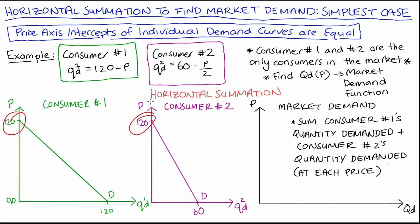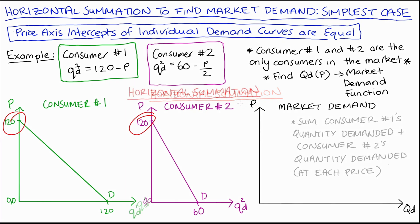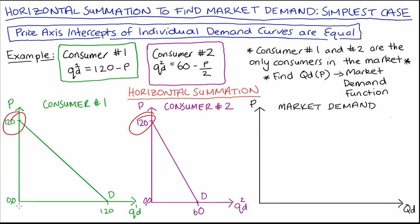It's called horizontal summation because we're summing up the variable that's on the horizontal axis — the quantity variable — and we're doing that for each price. We can demonstrate this for one special price: when the price is zero, when the price is free, consumer number one demands 120 and consumer number two demands 60. So together, given that they're the only two consumers in this market, they will demand 180. So that must be the quantity demanded in the market when the price is zero — that's 120 plus 60. So this will be our quantity axis intercept for our market demand.